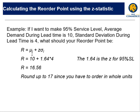R equals the average during the lead time plus the z-statistic for 95%, which is 1.64—I gave that to you just two slides before—and then multiply it times the standard deviation. That means R equals 10 plus 1.64 times 4.